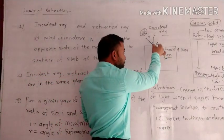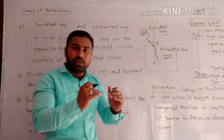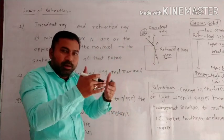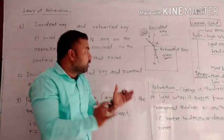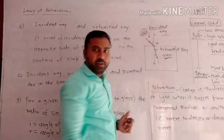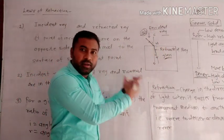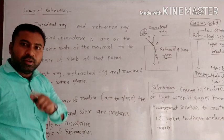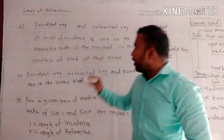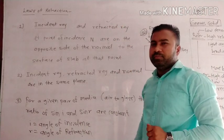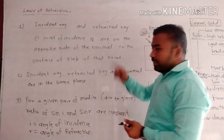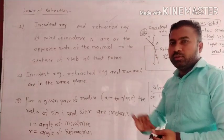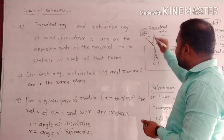The boundary is where the two mediums meet — having different density and different rarity. So the first law of refraction states that the incident ray and the refracted ray are on opposite sides of the normal at the point of incidence. You may know this from the laws of reflection — in reflection too, the incident ray and the reflected ray are opposite to the normal.